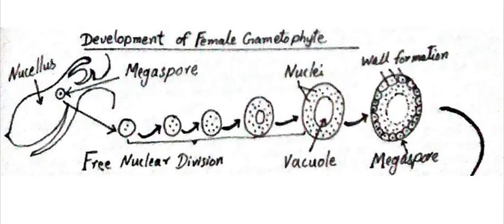In this diagram we can see the development of the female gametophyte. This is the ovuliferous scale, and on this ovuliferous scale an ovule is produced having nucellus and integuments around it. This megaspore is produced toward the micropylar end in the nucellus after reduction division. The nucellus is diploid while the megaspore produced after reduction division is haploid.